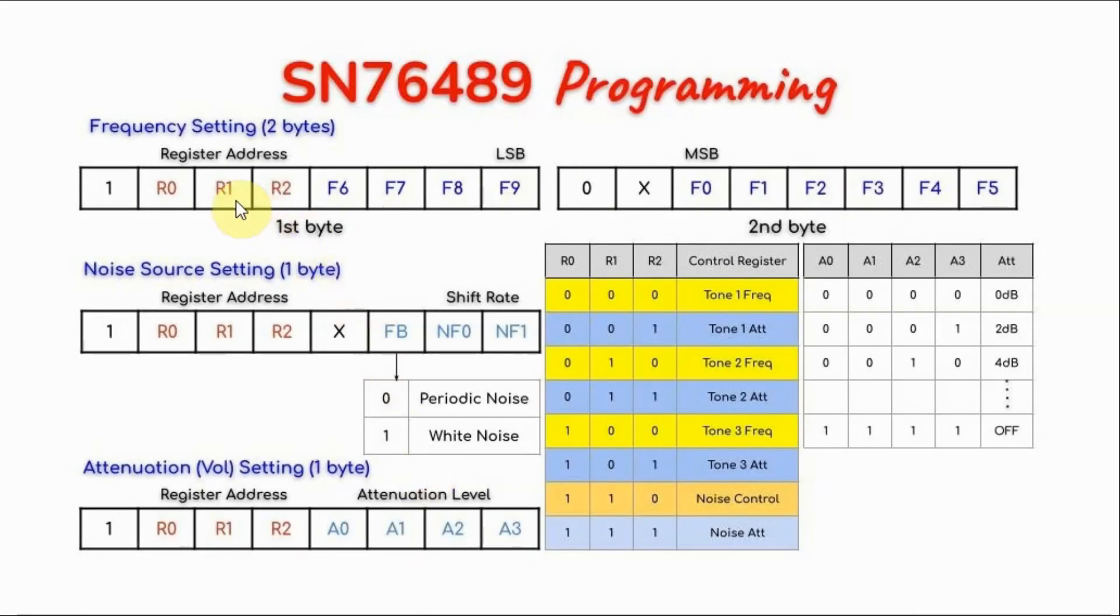To set the frequency of the tone, we need to send 2 bytes of data to the IC. The first byte will contain a 3-bit register address. According to this truth table, this value will select one of the 8 control registers inside the IC.